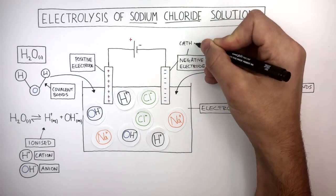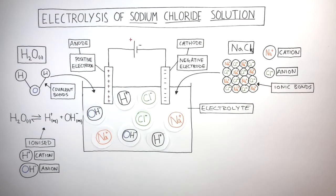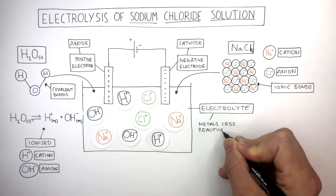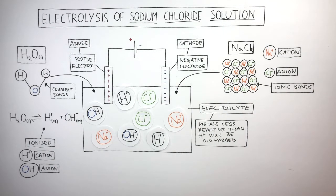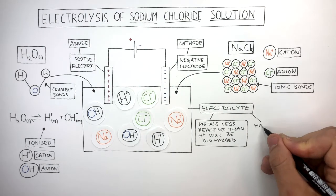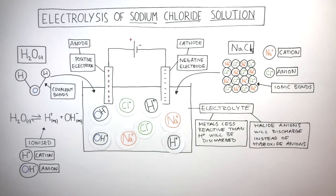The negative electrode is called the cathode and the positive electrode is called the anode. Cations are attracted to the cathode and anions are attracted to the anode. At the cathode, metals less reactive than hydrogen will be discharged. As sodium is more reactive than hydrogen, hydrogen gas will be formed at the cathode. At the anode, halide anions discharge instead of hydroxide anions, so chloride anions discharge forming chlorine gas, as chlorine is a halogen.